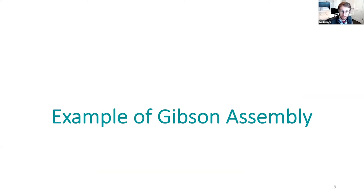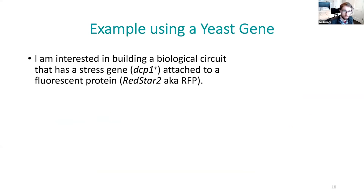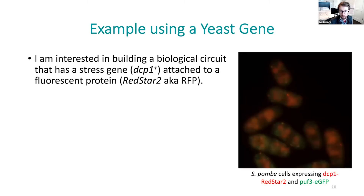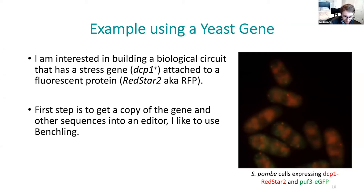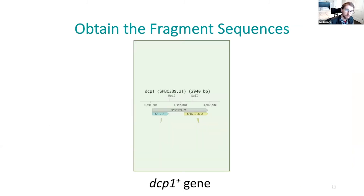Now I'll go through an example using a yeast gene from my PhD. I was interested in a stress gene and wanted to attach a fluorescent protein to it — in this case RedStar2, basically a variant of RFP — to localize where the protein was being expressed under stress conditions. The first thing is to get the sequence. For S. pombe, which was my organism, you can go to PomBase, pull down the annotation information, and get the sequences you need. I like to use Benchling, though there are plenty of other tools.